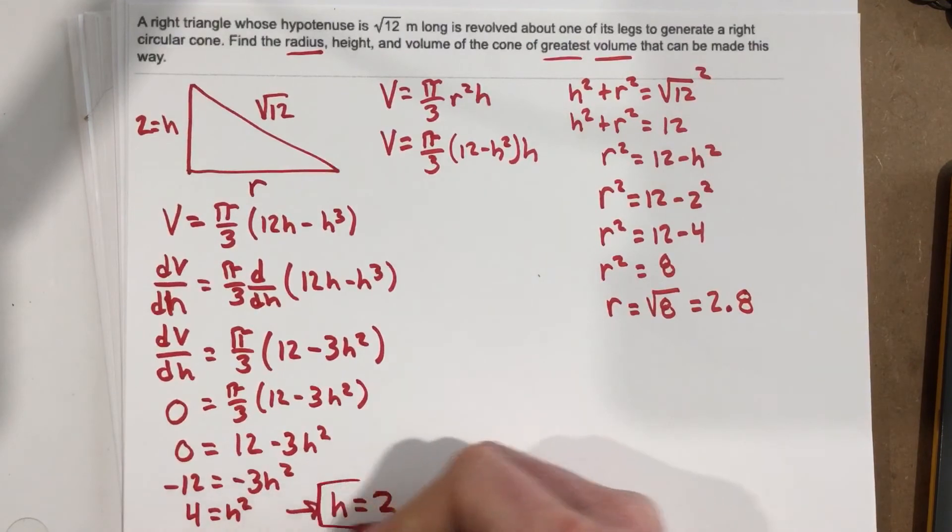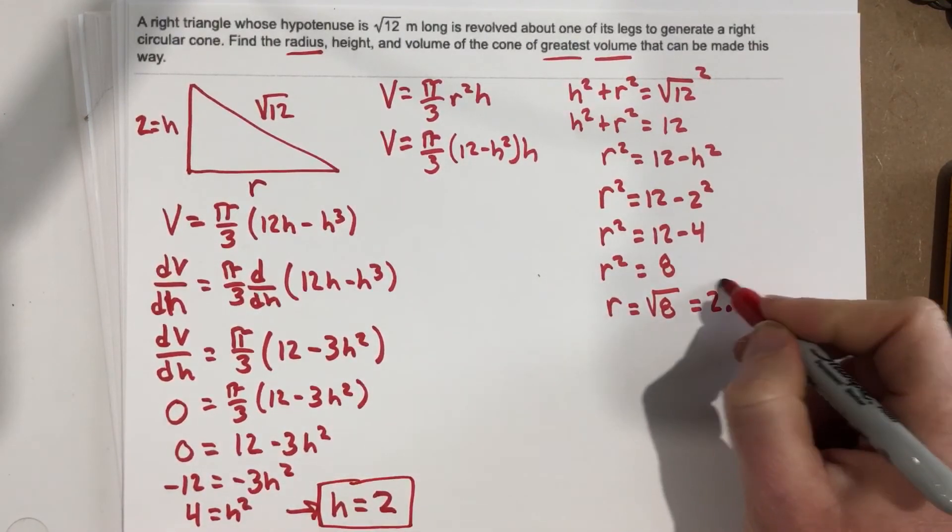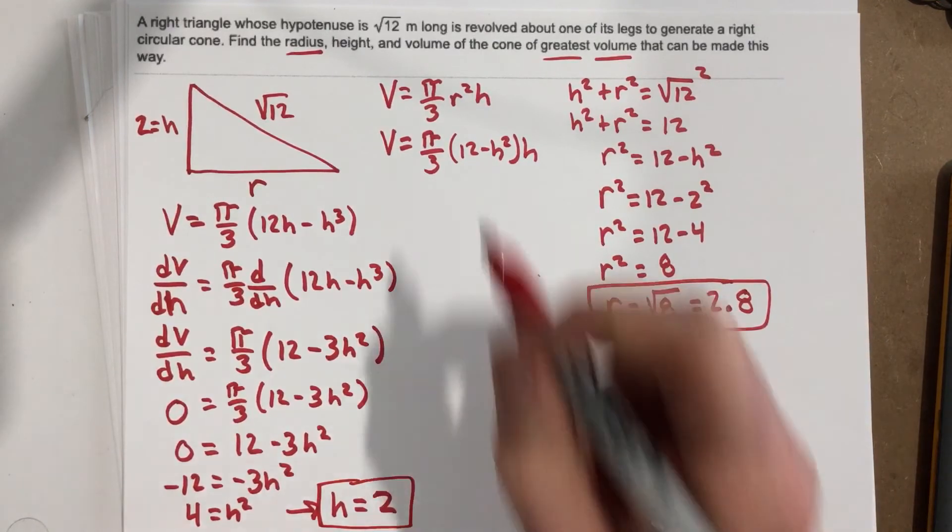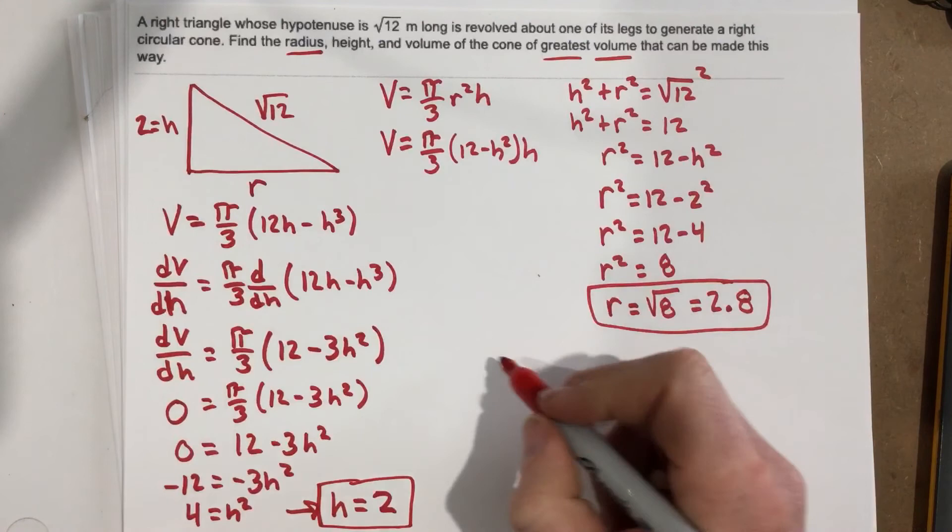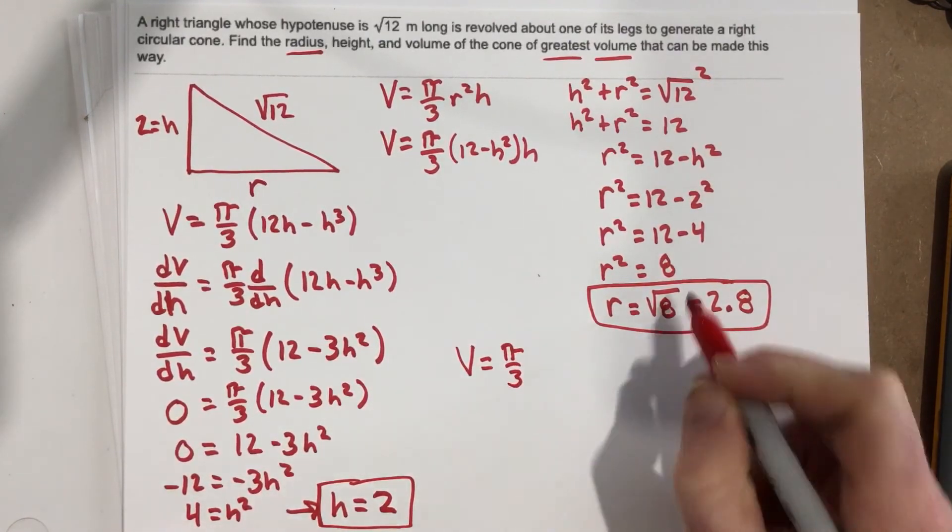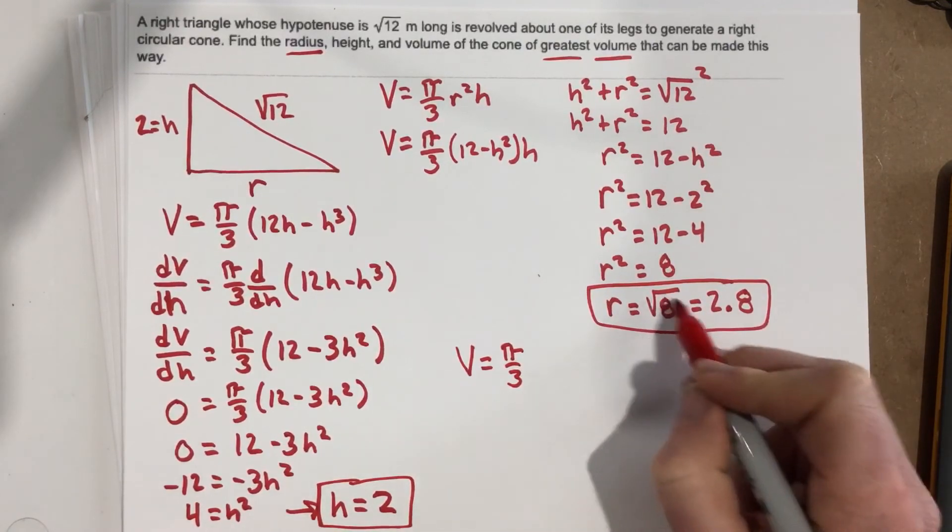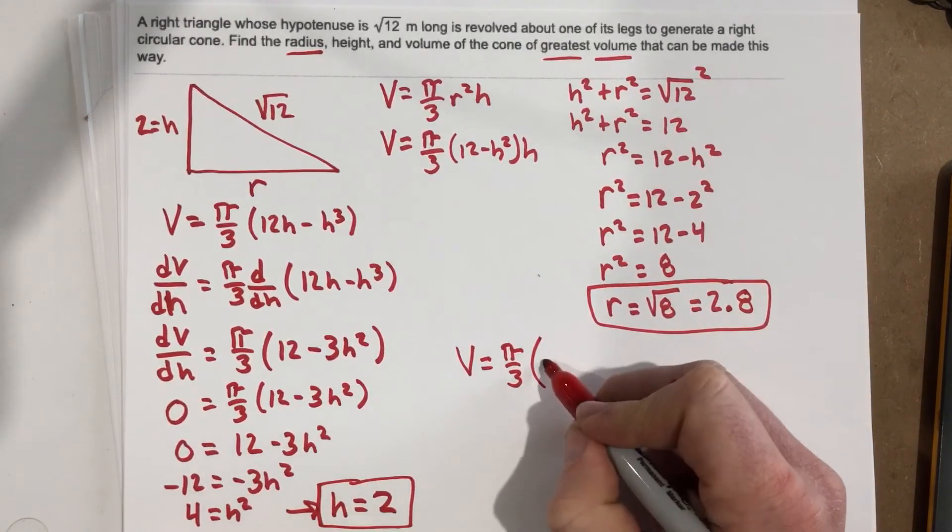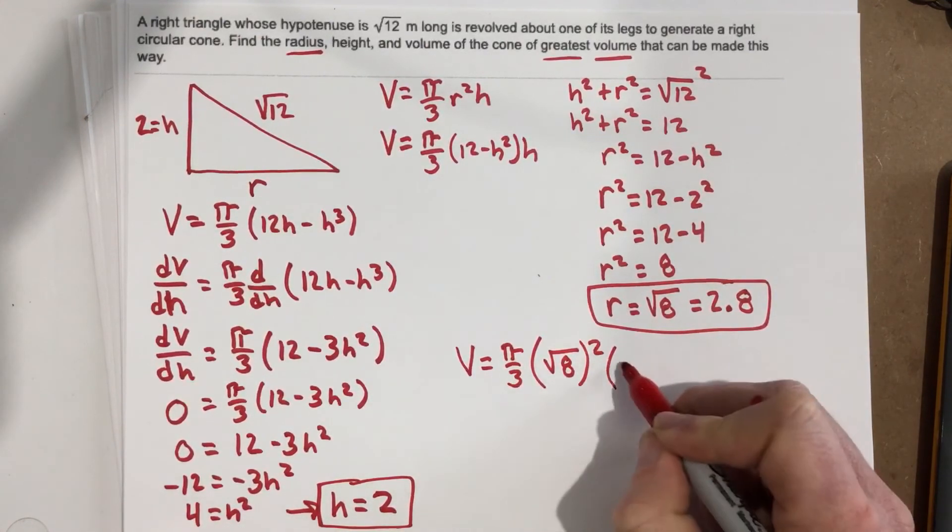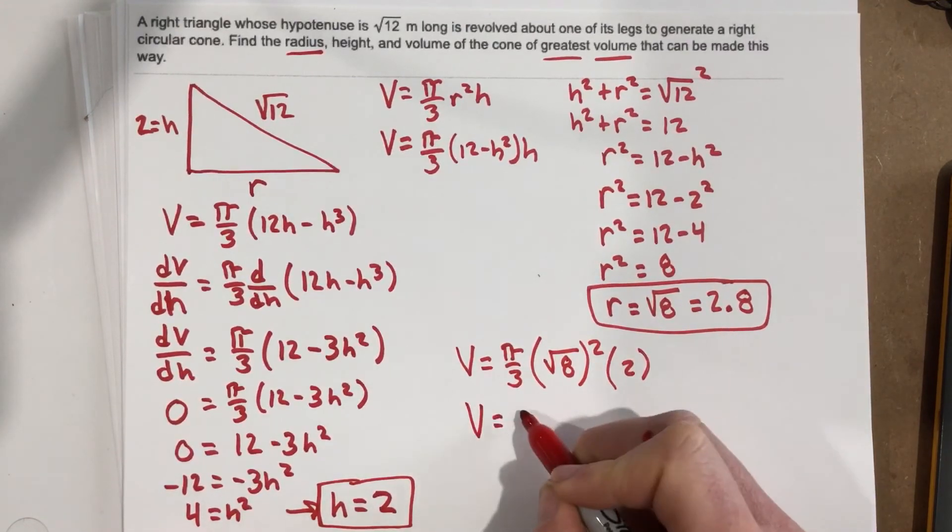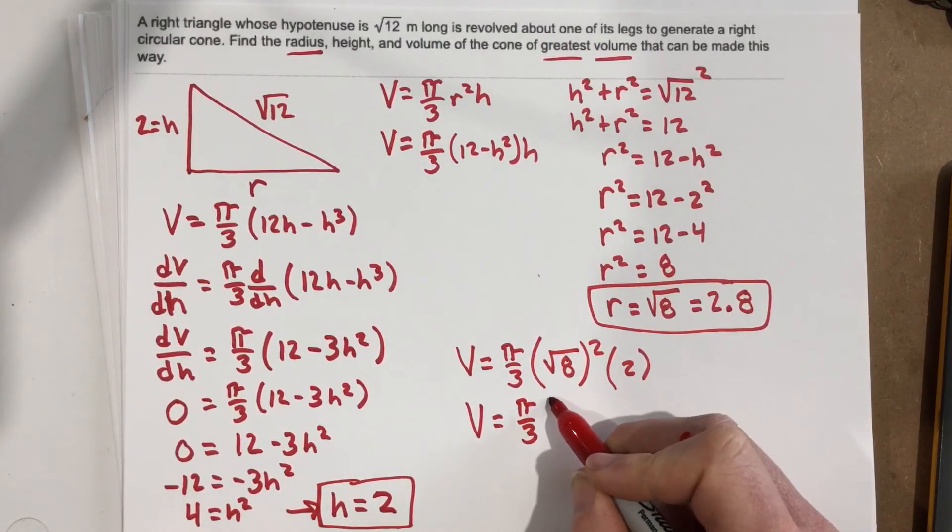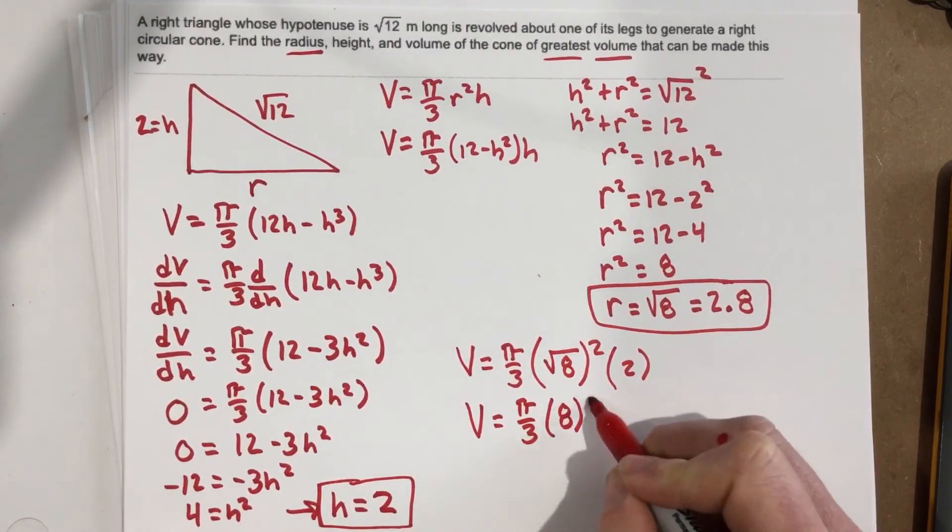So we know the height, we know our radius—the only thing we don't know is volume. Well, let's use this volume equation. We're going to say V = π/3 · (√8)² · 2. I'm just going to use √8 instead of 2.8—√8 is a more exact number. So √8 squared is just 8, times 8 times 2.